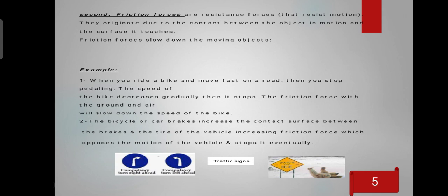The friction force with the ground and air will slow down the speed of the bike. As an example, the brakes of cars increase in contact surface between the brakes and the tire of the wheel.